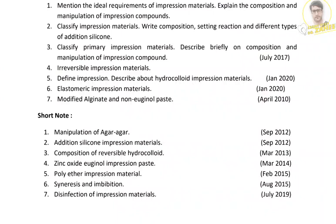The primary impression materials are used for making the preliminary or primary impressions, and the materials used are alginate and modeling compound. Alginate may be used for preliminary impressions for complete dentures, some cases of RPD, and some cases of APD. Alginate impressions should be poured immediately. Modeling compound, or impression compound, is also used as a primary impression material, and we have to write regarding the composition and manipulation of the impression compound.